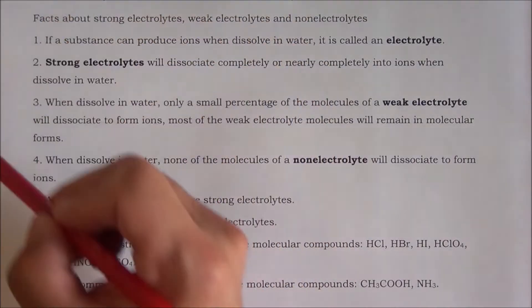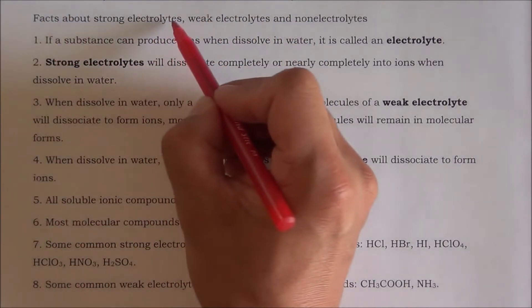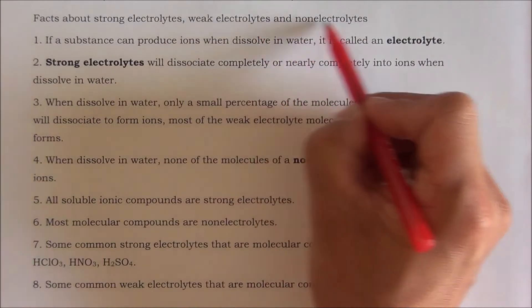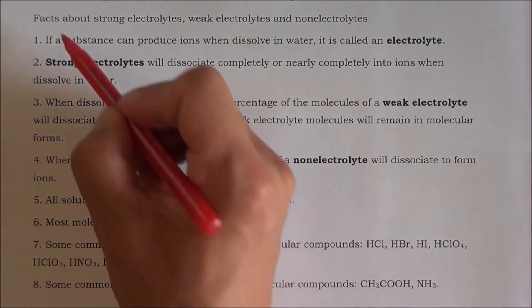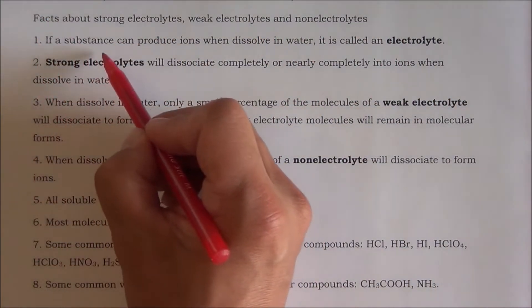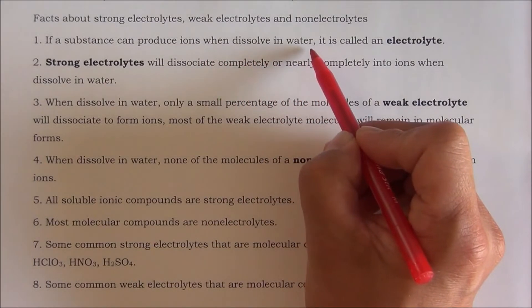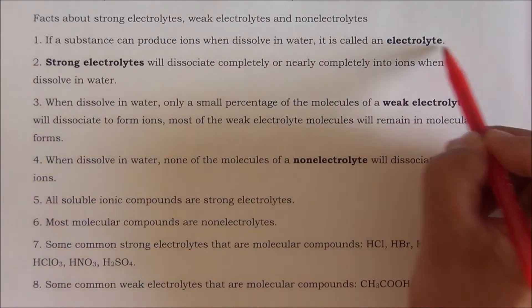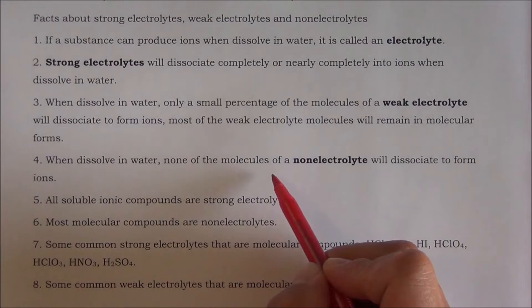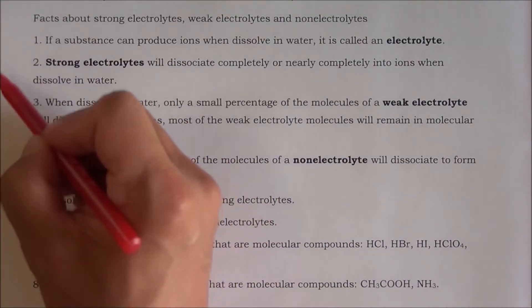There are some facts I want you to memorize about strong electrolytes, weak electrolytes, and non-electrolytes. Number one: if a substance can produce ions when dissolved in water, it is called an electrolyte. Otherwise, it is called a non-electrolyte.